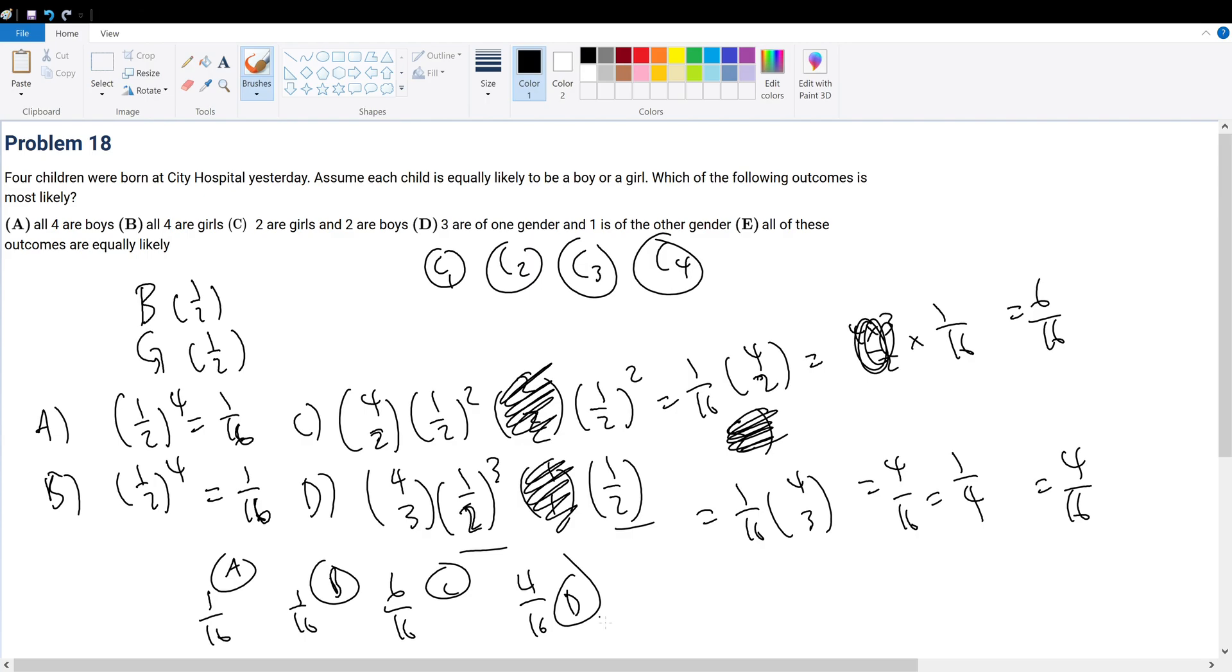No, it won't be right for D to just be this, because there's symmetry. 3 are 1 gender, and 1 is the other gender. We must consider there's 2 cases within D, right? So we have to multiply that by 2, actually.